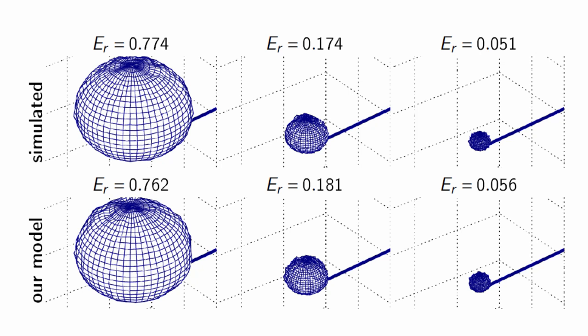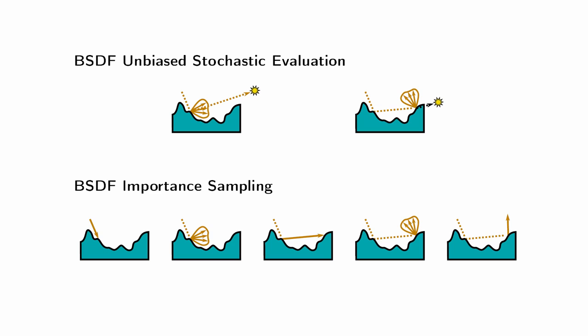To make the model practical, we implement two procedures: evaluation and importance sampling. Since the BSDF is the expectation of all the paths that can be traced on the microsurface, importance sampling can be done straightforwardly by generating one path. We construct an unbiased, stochastic estimate by tracing one path and evaluating the phase functions at each intersection with next event estimation.